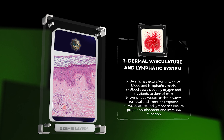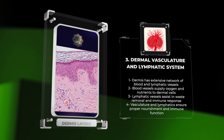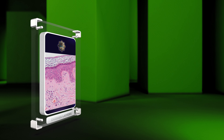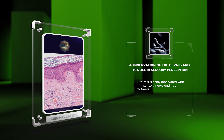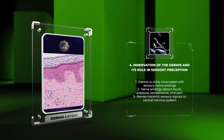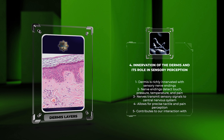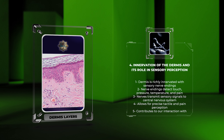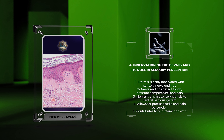The dermis is abundantly innervated with sensory nerve endings dispersed throughout its layers. These nerve endings detect a variety of sensations including touch, pressure, temperature, and pain.